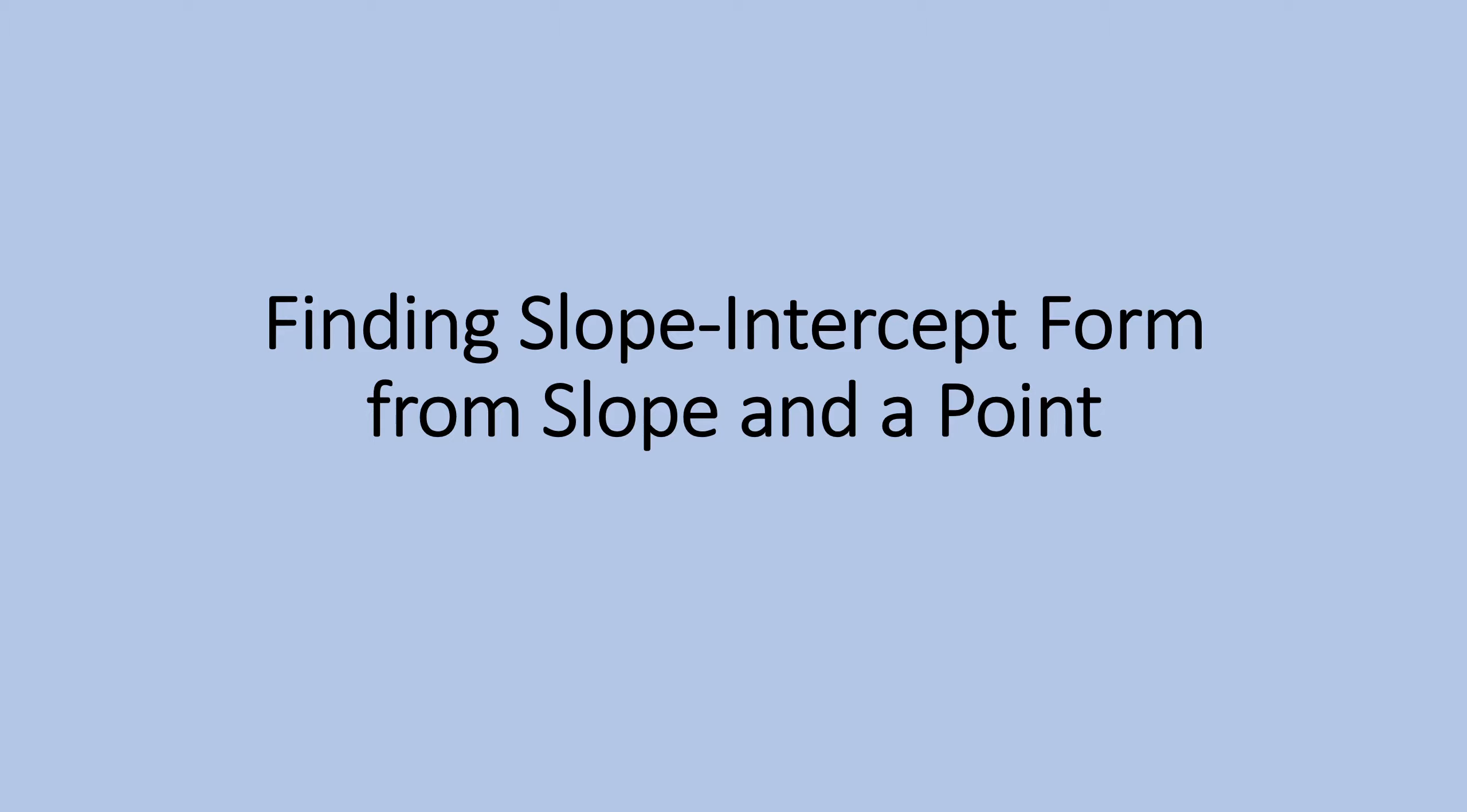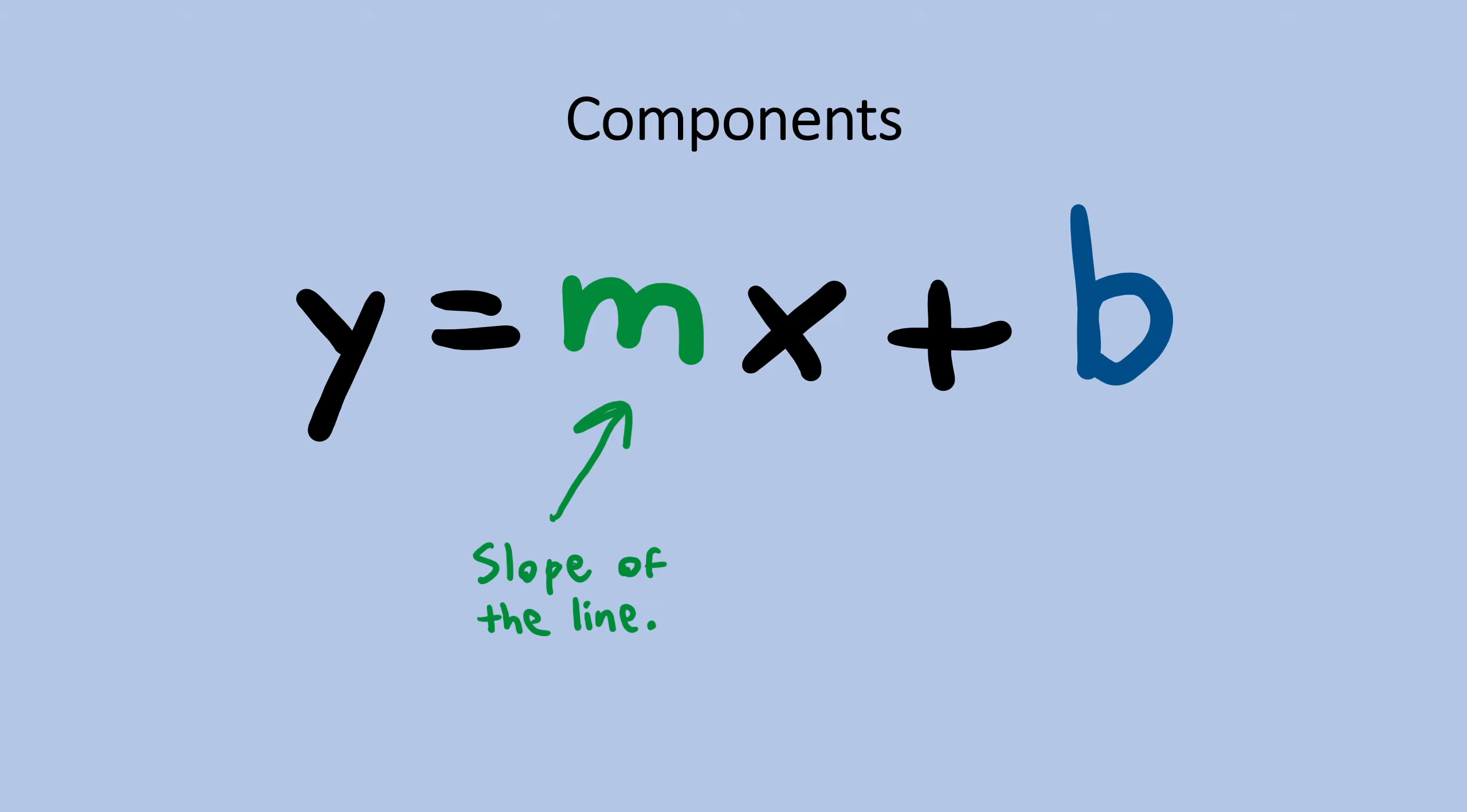Let's begin by reviewing slope-intercept form itself. The m in slope-intercept form stands for the slope of your line. The b in slope-intercept form stands for the y-intercept of your line.